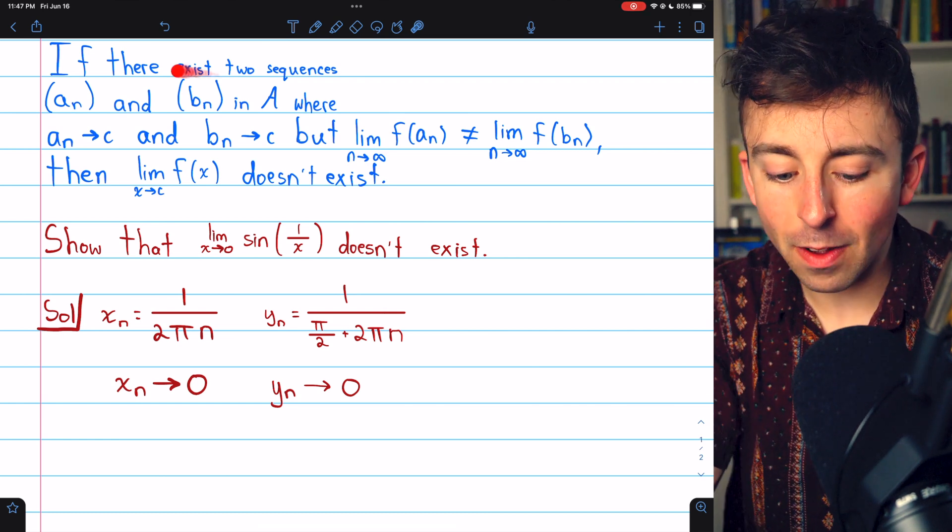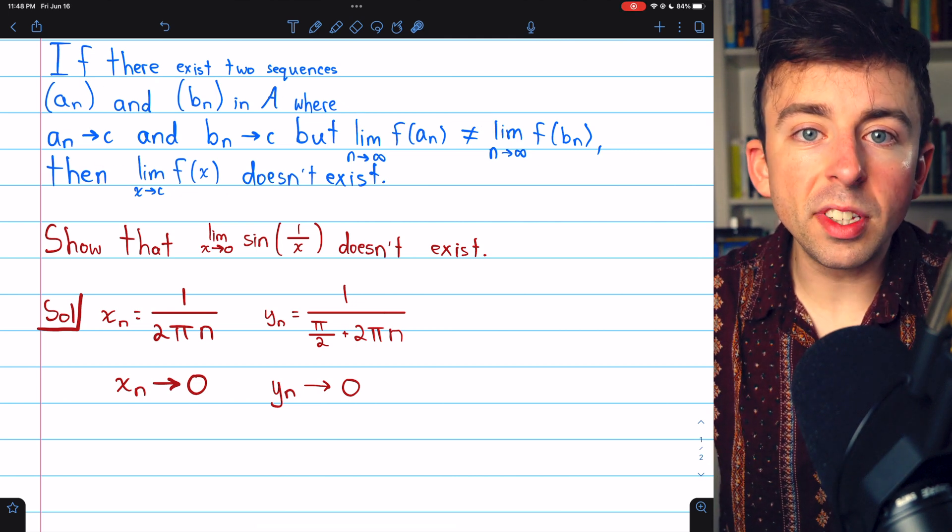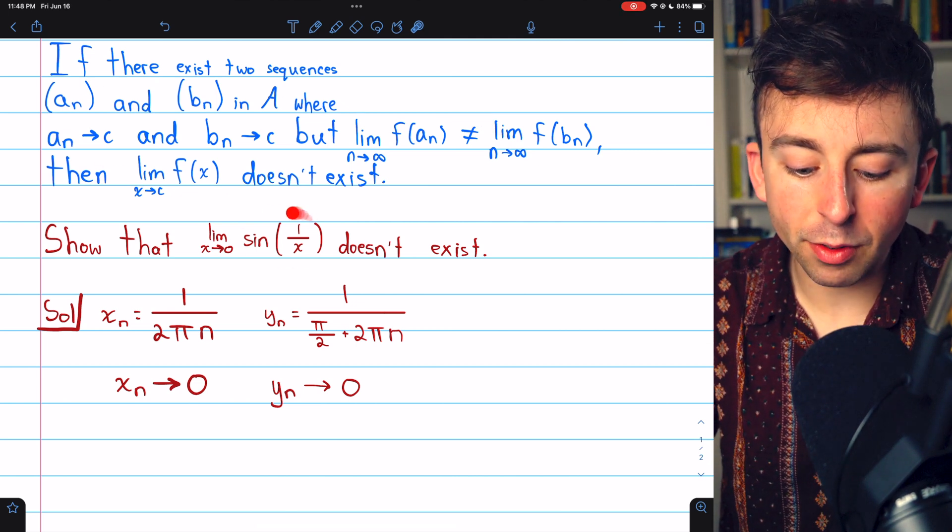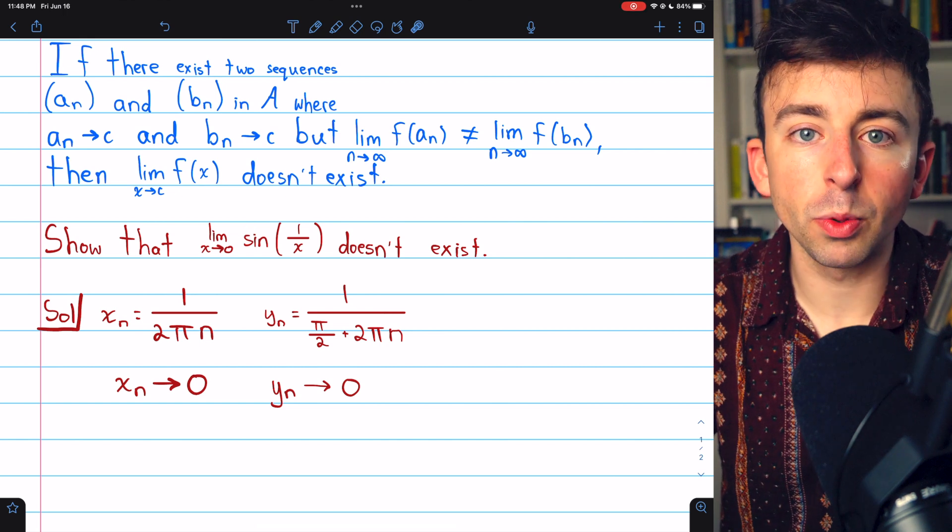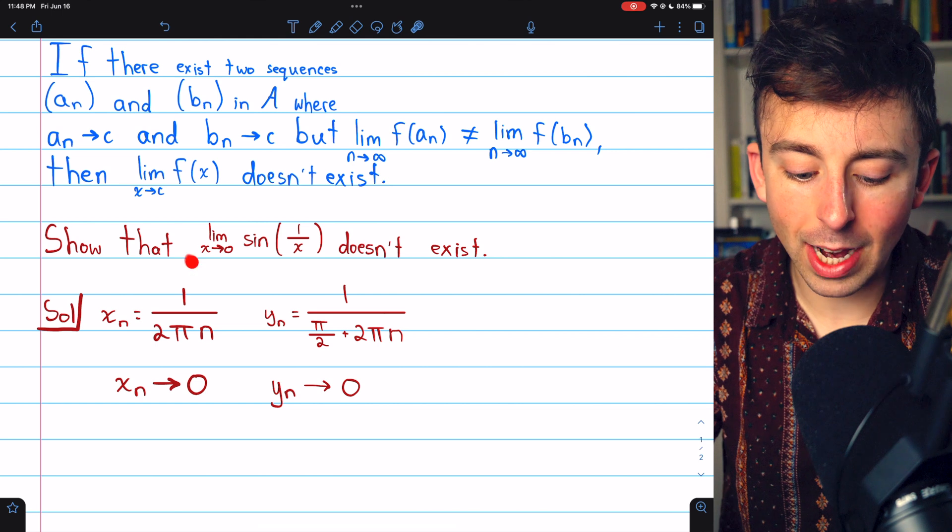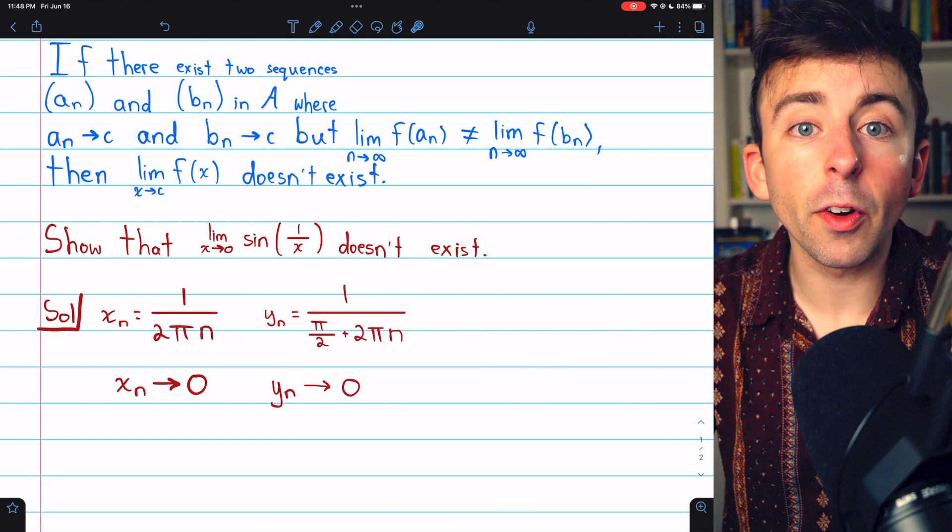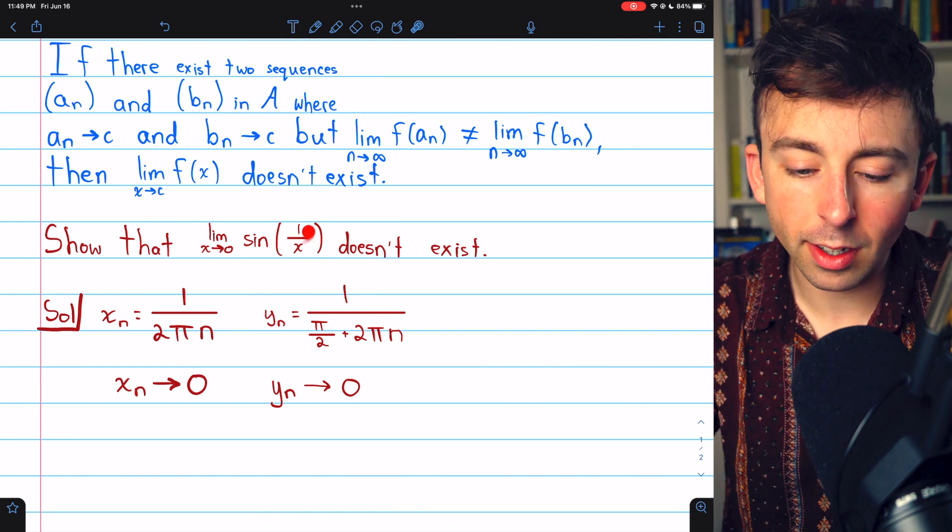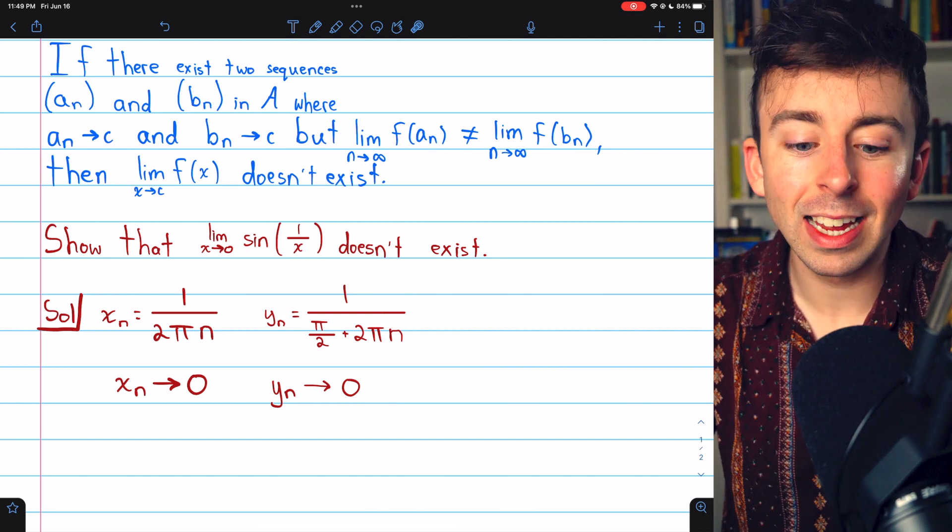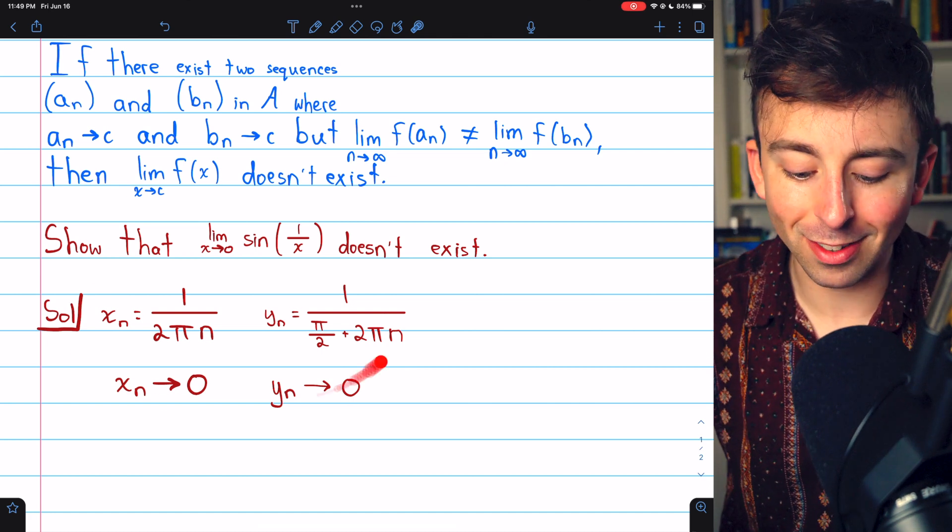We can do it quite easily by using this sequential criterion. If we can find two sequences in the domain of this function, which is the real numbers without zero, that converge to zero, but where the sequences of their images under the function do not have the same limits, then this limit must not exist. So here is the solution.